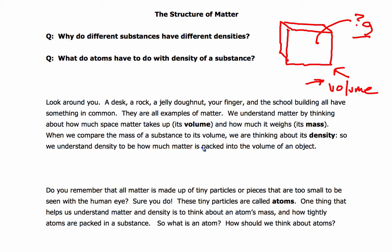...we're thinking about its density. We understand density to be how much matter is actually packed into the volume of an object. So let's make sure we get the word volume circled in red, and also the word mass circled in red, and the word density circled in red.